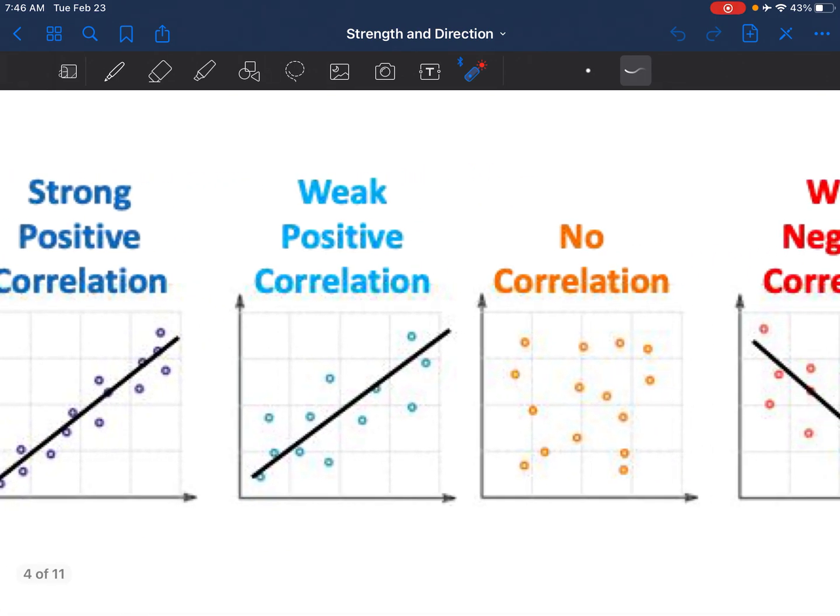This is a weak positive correlation. It's still a very clear line, but then some of these points are now getting further and further away from the line. It's more spread out.